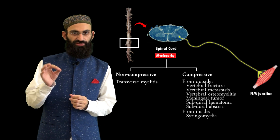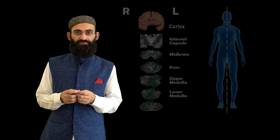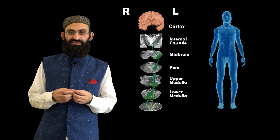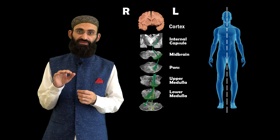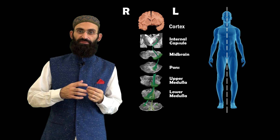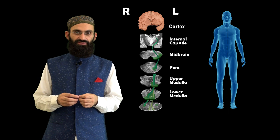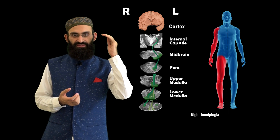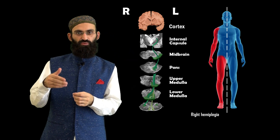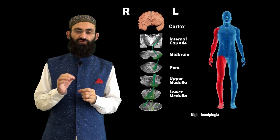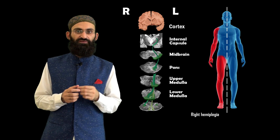Hemiplegia results from unilateral damage to the corticospinal tract, which can occur at the level of the brainstem, internal capsule, or cerebral cortex. Since the corticospinal tract crosses the midline at the level of the lower medulla, damage at any of these levels results in hemiplegia on the contralateral side. An important point in localizing a brainstem lesion is to look for involvement of cranial nerves.